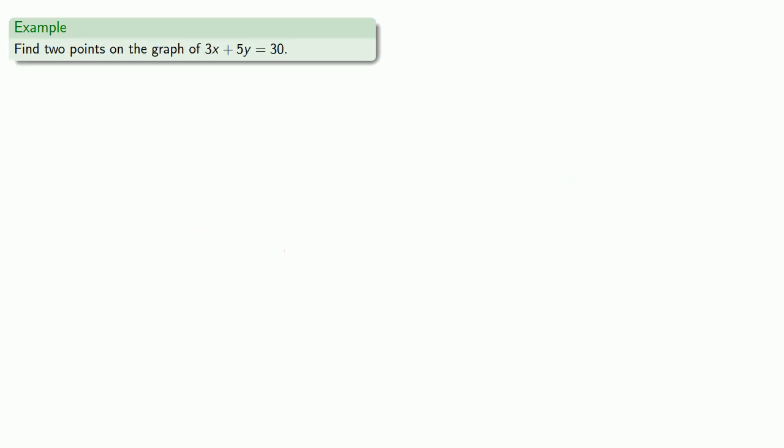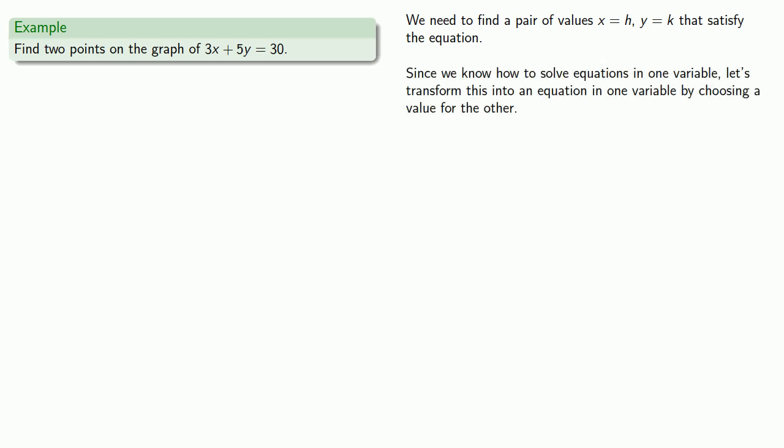Checking to see if a point is on the graph is relatively easy. It's a little bit harder to find points on the graph. So if I want to find two points on the graph, I need to find a pair of values, x = h, y = k, that satisfy the equation. It's useful to keep in mind, we already know how to solve equations in one variable, so let's transform this into an equation in one variable by choosing a value for the other.